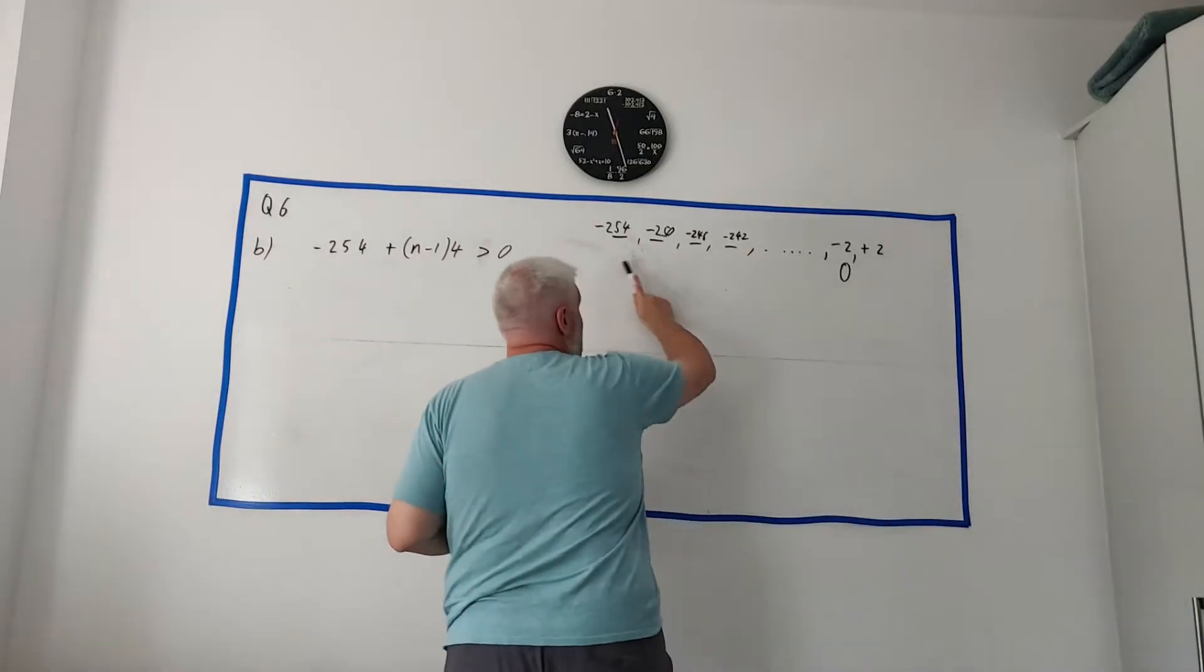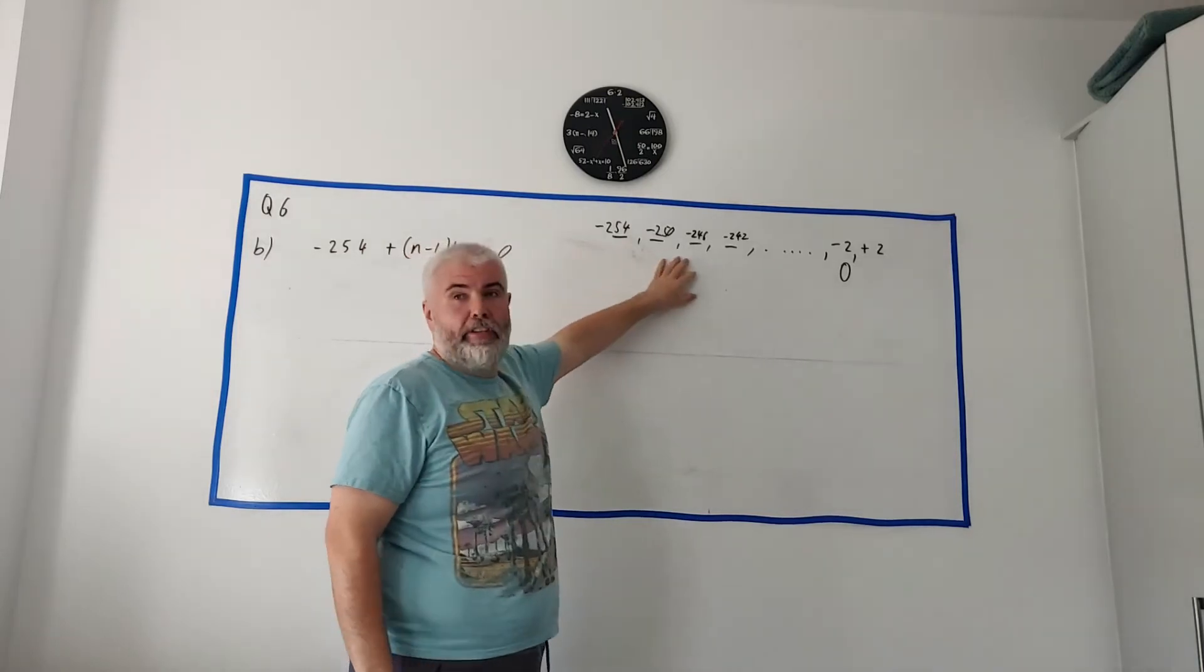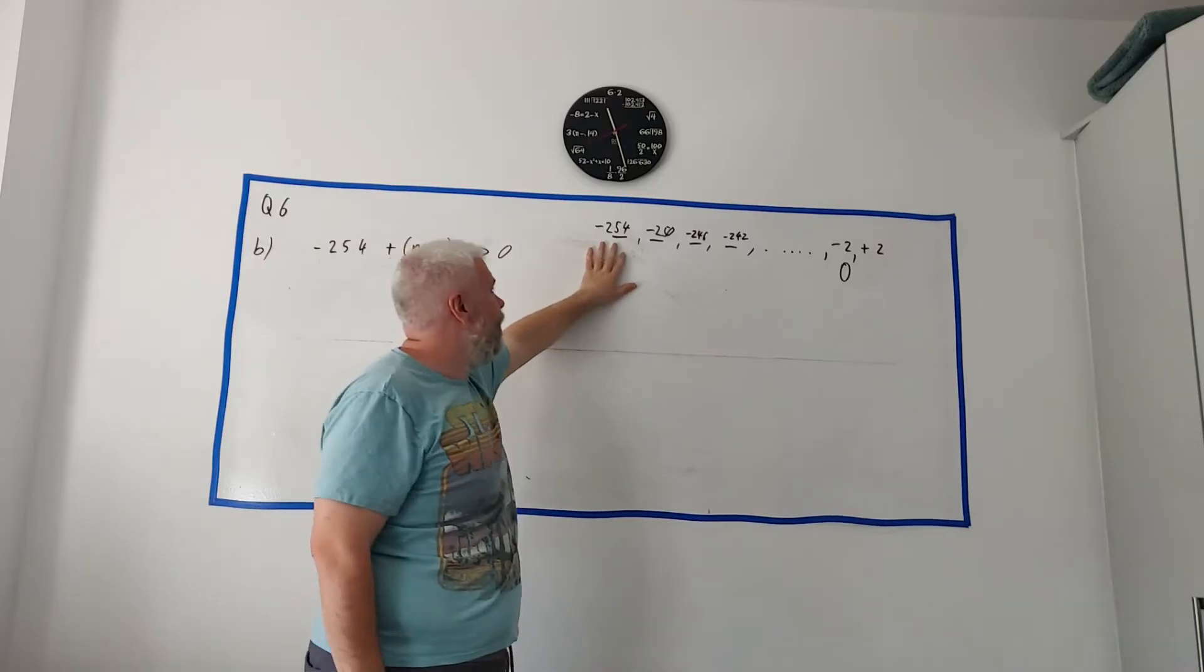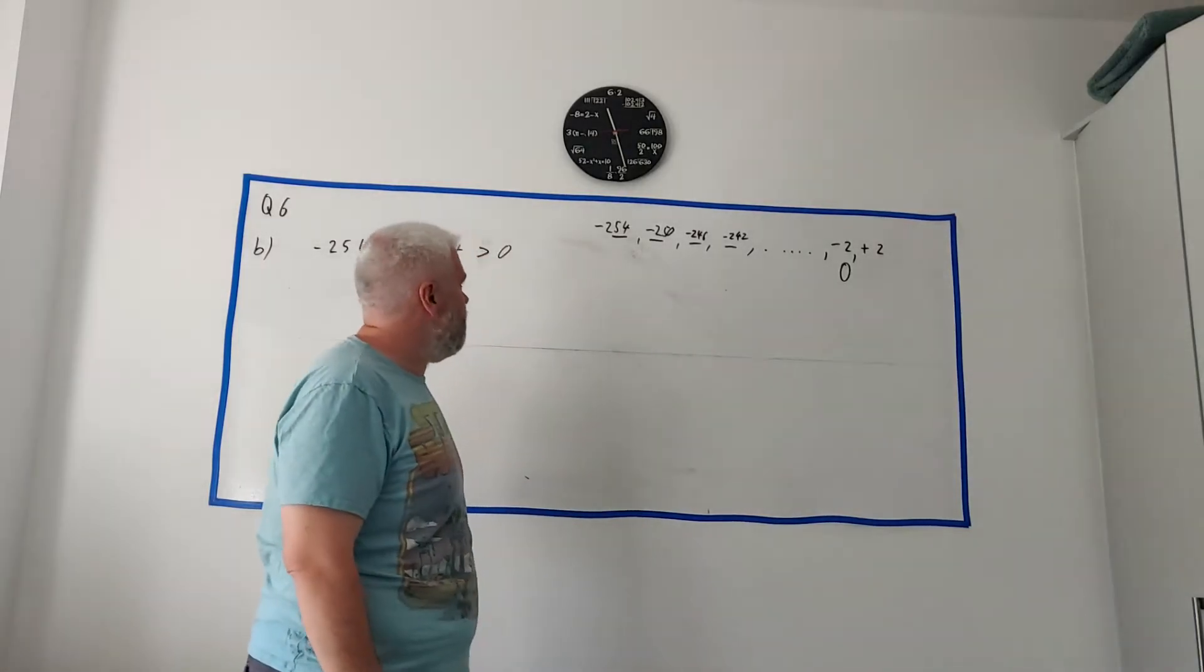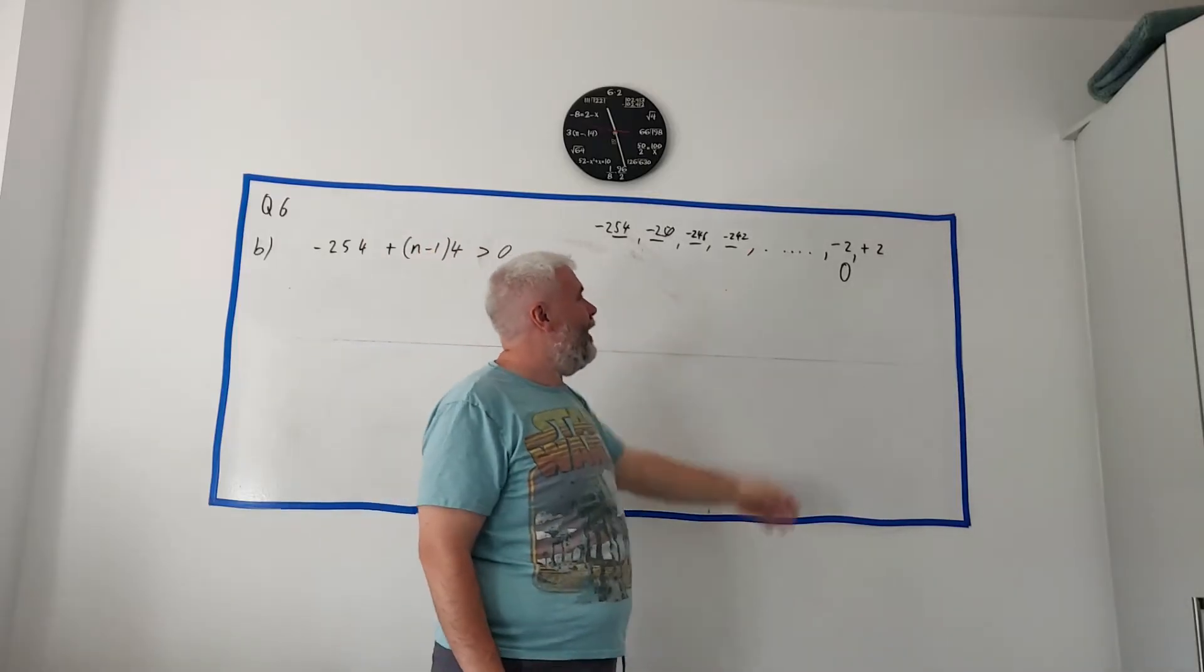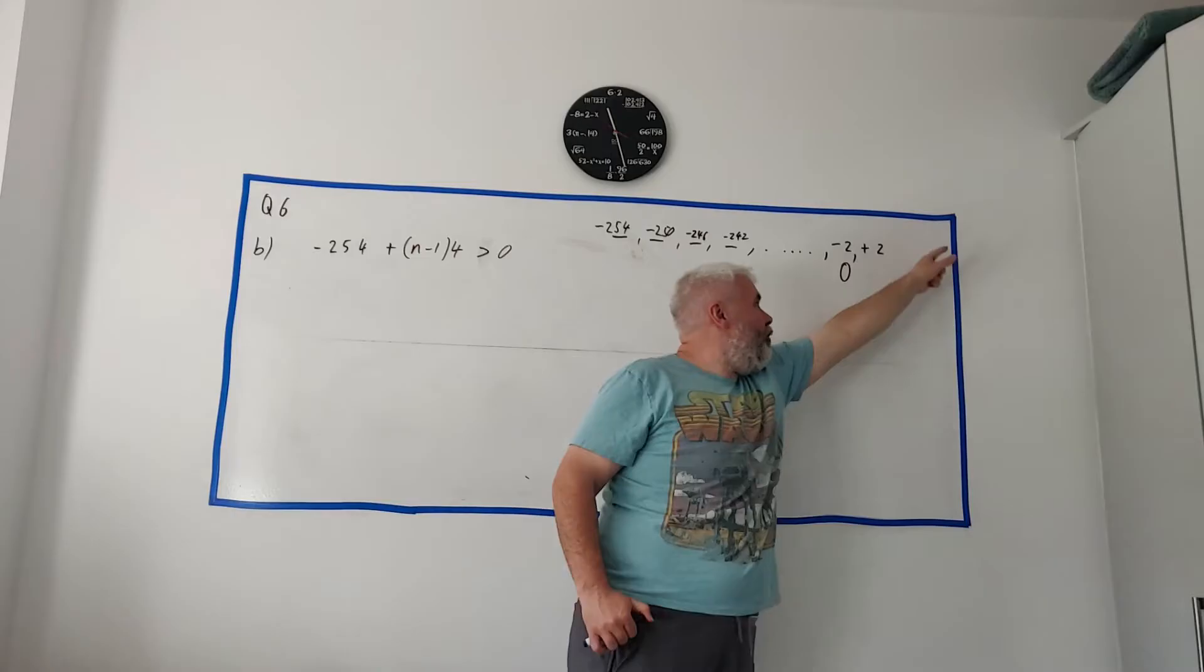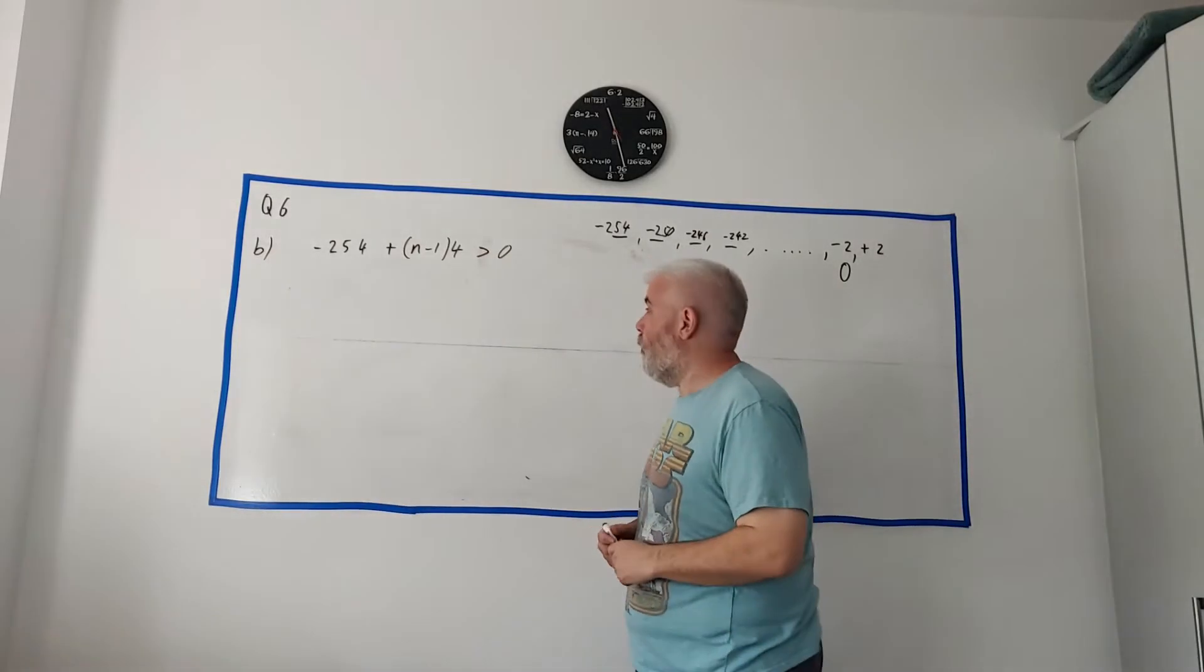You could do this a couple of ways. You could just think it through. You could say, well, it gets smaller by 4 every time. Divide 4 into this number. Should get you fairly close. You could also just guess some answers. Maybe T20. See where that brings you. Should be a minus still. T100. See where that brings you. Should be somewhere over on the plus side. So, you could guess some answers. I'm going to show you how to do the algebra way.